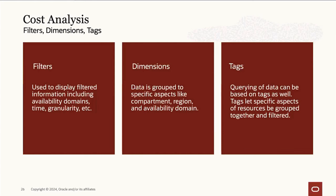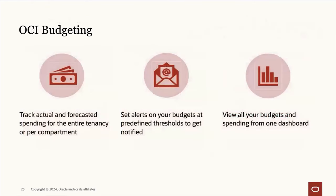An important distinction: for cost analysis, you can filter and add a dimension on any tag, even a free-form tag, without cost tracking enabled. However, for the budget service, if you want to set a budget scope on a tag, it does have to be cost tracking enabled.